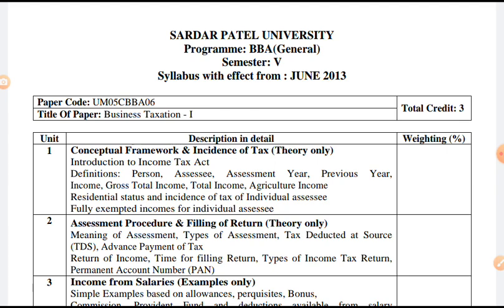With endeavours to simplify the Act, it has been made comprehensive. The Act of 1961 runs into 23 chapters, 298 sections, and 14 schedules. The basic principles of the 1922 Act have been retained in the current Act, but the procedures have been fundamentally changed. The Central Board of Direct Taxes, popularly known as CBDT, has been empowered to frame rules and guidelines, which have to be implemented in the same manner as the Act and the Rules. The Board normally consists of 5 to 7 members.